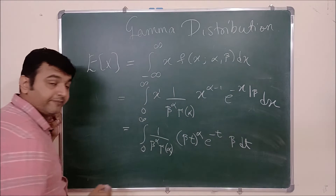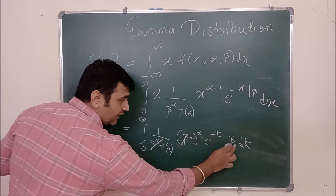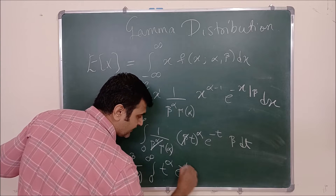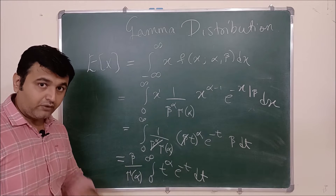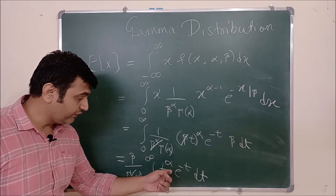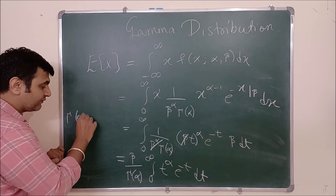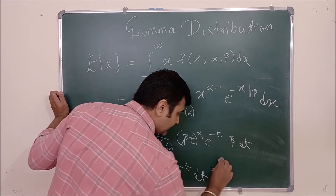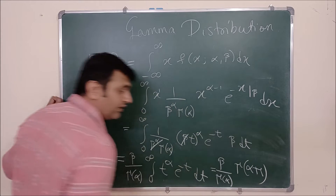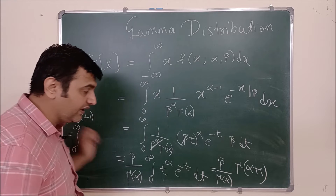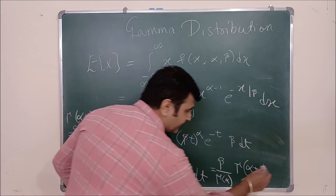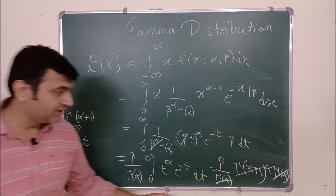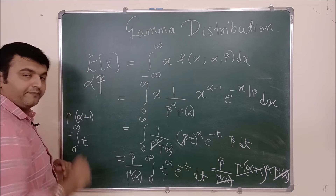After substituting, β^α cancels with 1/β^α, and we get (β / Γ(α)) · ∫₀^∞ t^α · e^(−t) dt. Since Γ(α) = ∫₀^∞ t^(α−1) · e^(−t) dt, we need input α+1 to get t^α inside. So this integral equals Γ(α+1). Using the property Γ(α+1) = α · Γ(α), the Γ(α) terms cancel, giving the mean = α · β.